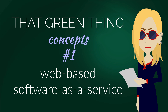Welcome to the first episode of the Concepts sub-series from That Green Thing series. That Green Thing is a web-based catalog management software as a service for music publishers. While concepts will be mostly from the music industry, they will also include concepts from other areas — like today, when we answer two questions: What is a web-based application? What is software as a service?